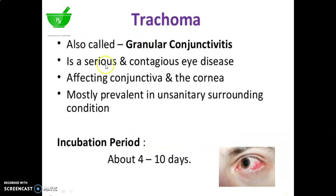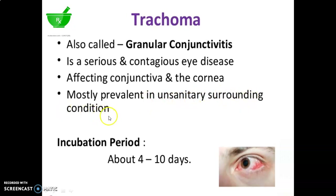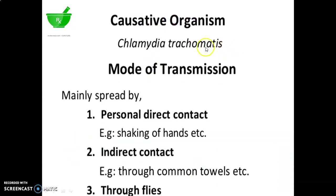Then Trachoma, also called granular conjunctivitis. It is a serious and contagious infectious disease affecting the conjunctiva and the cornea, mostly prevalent in unsanitary surrounding conditions. Incubation period is about 4 to 10 days. The positive organism is Chlamydia trachomatis.